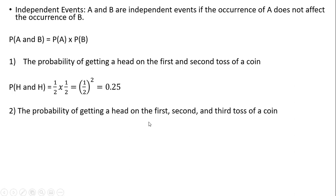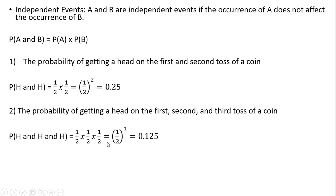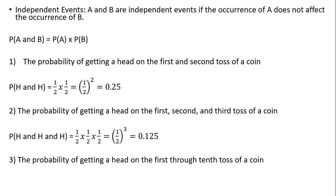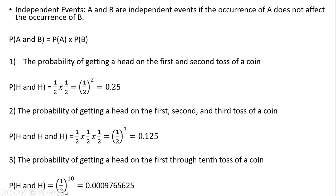The probability of getting a head on the first, second, and third toss of a coin — these are all independent events — so we multiply one-half times one-half times one-half, which equals 0.125, or 12.5%. The probability of getting a head on the first through tenth toss — that is, getting ten heads in a row — is simply one-half to the tenth power, giving a very small result.